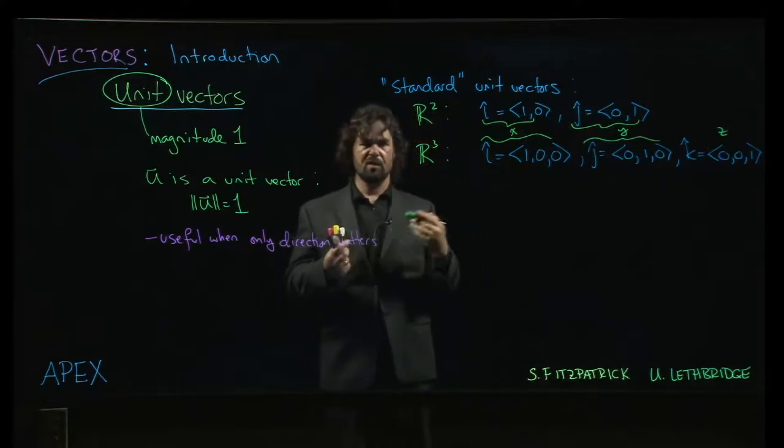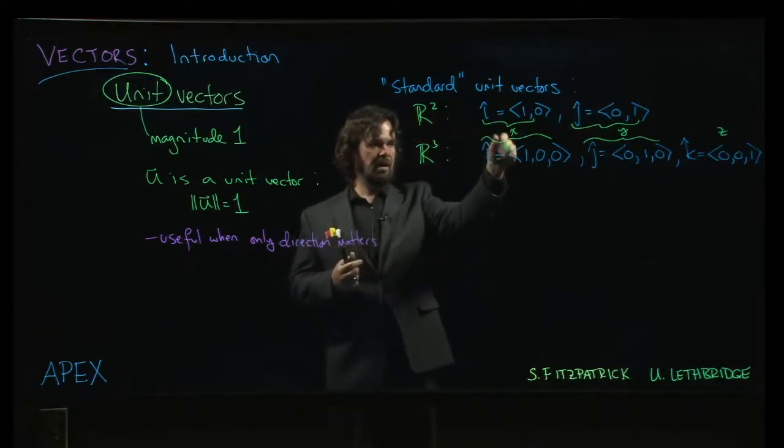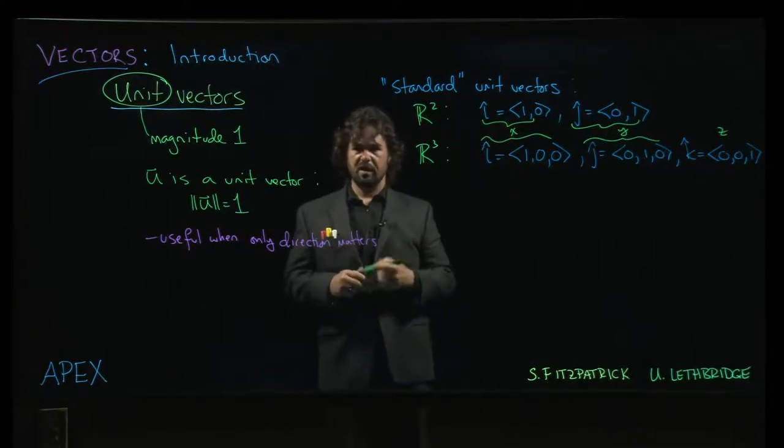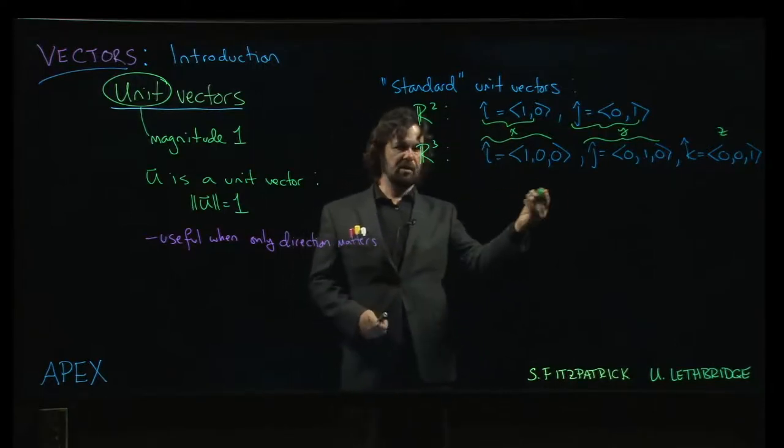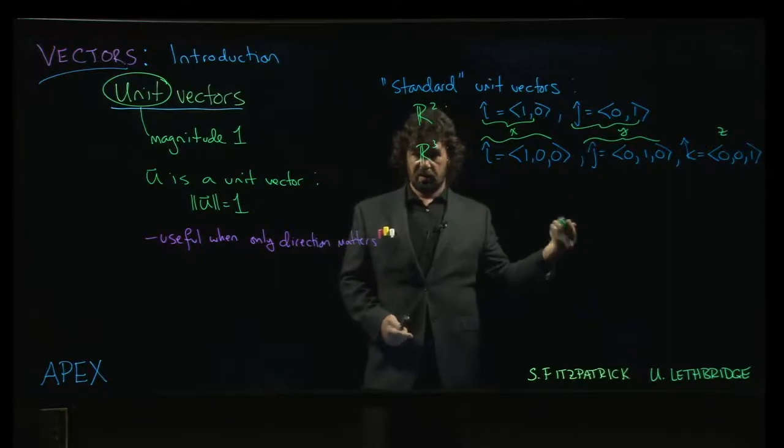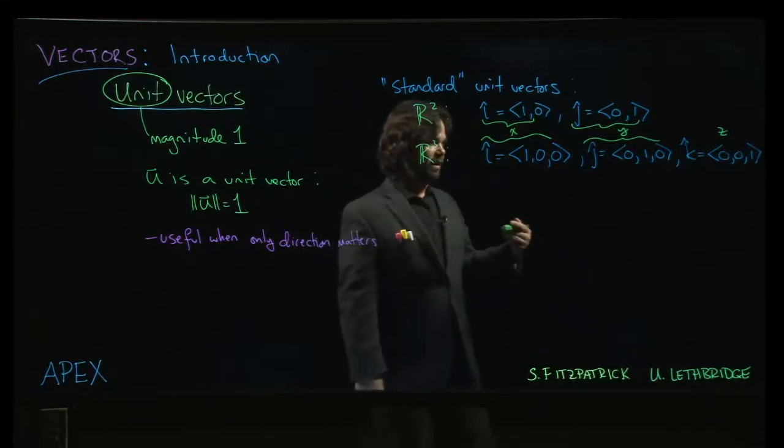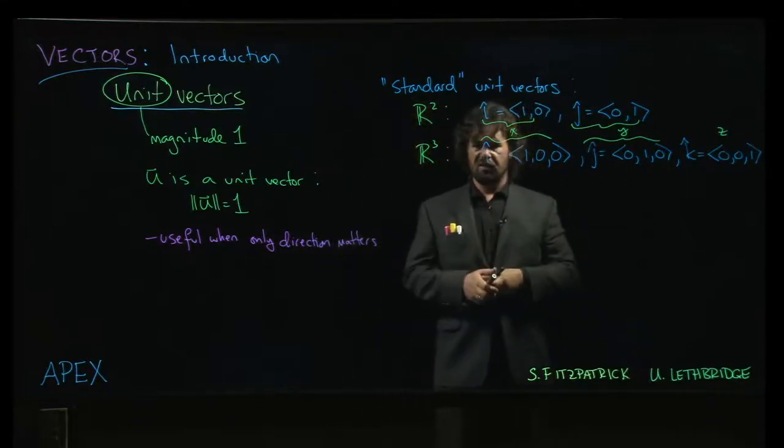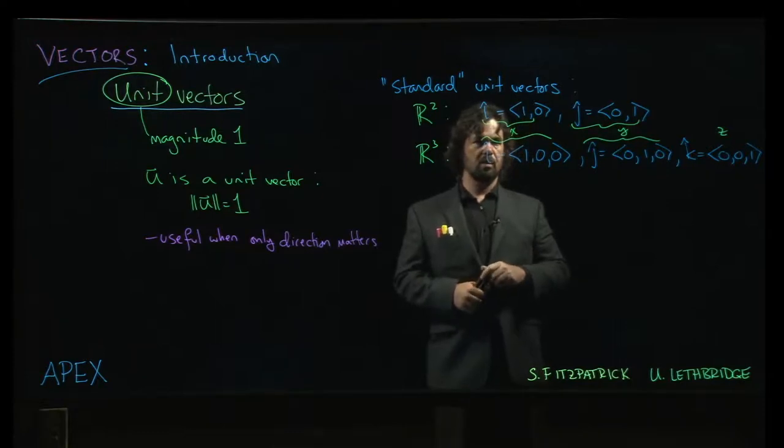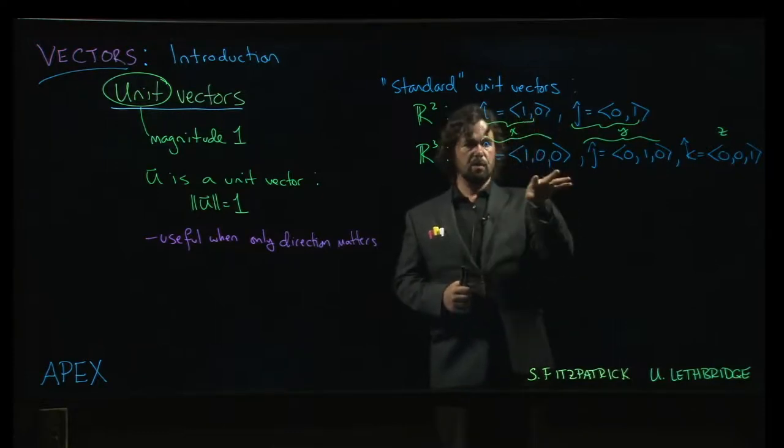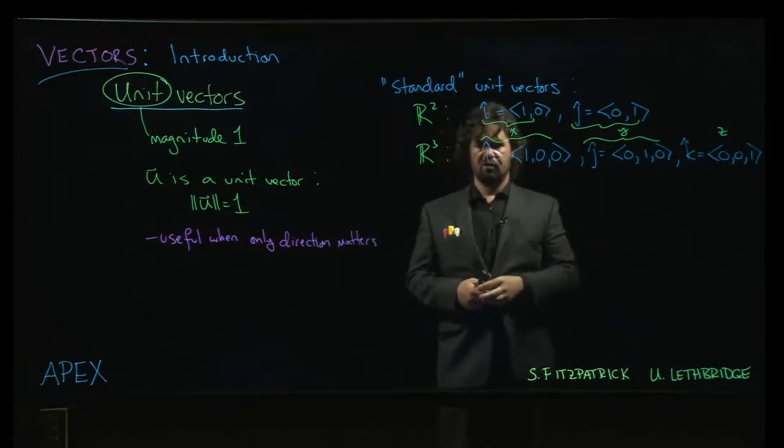And so you can sort of use i to represent either of these interchangeably, and understand by the context whether it represents a two-dimensional vector or a three-dimensional vector. And sometimes that kind of simplifies some of the statements that you want to make, because you don't have to worry about whether you're writing your vectors with two components or three. You can just use i and j.